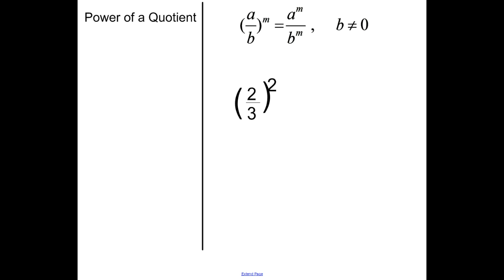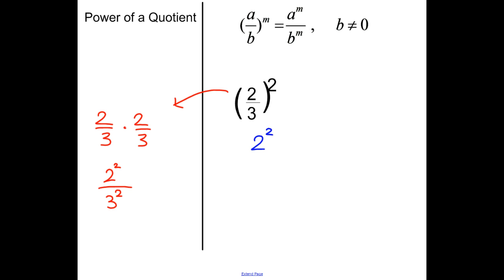Now power of a quotient: if you take a fraction A over B raised to the mth power, you distribute that m through to both pieces. To show why — two-thirds squared means two-thirds times two-thirds, and when we multiply fractions we multiply across: 2 times 2 is 2 squared over 3 times 3 is 3 squared. Using the rule, that squared goes through to both pieces, simplifying to 4 over 9. Remember B cannot equal zero.